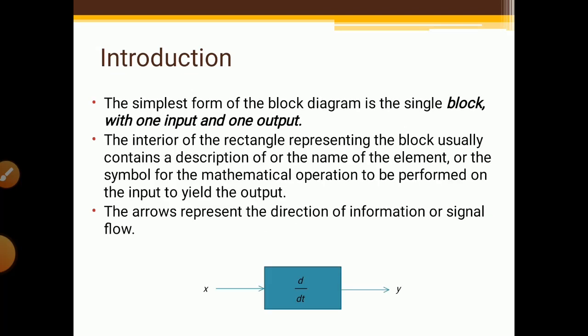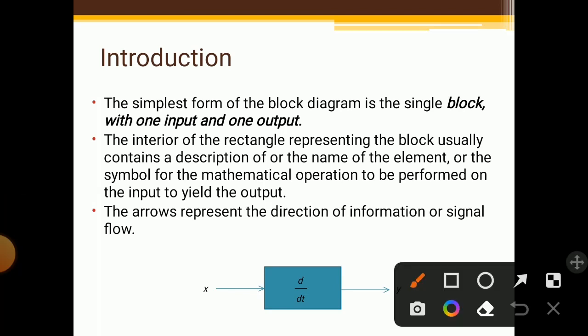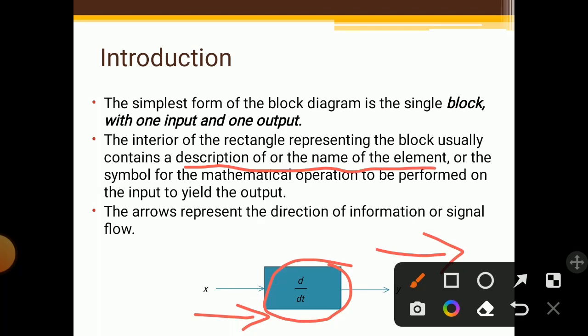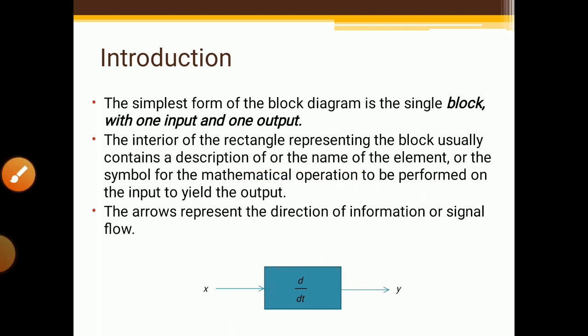The simplest form of the block diagram is the single block with one input and one output. The interior of the rectangle representing the block usually contains a description or name of the element, or the symbol for the mathematical operation to be performed on the input to produce the output. The arrow represents the direction of information or signal flow. So X is the input to the block and Y is the output.